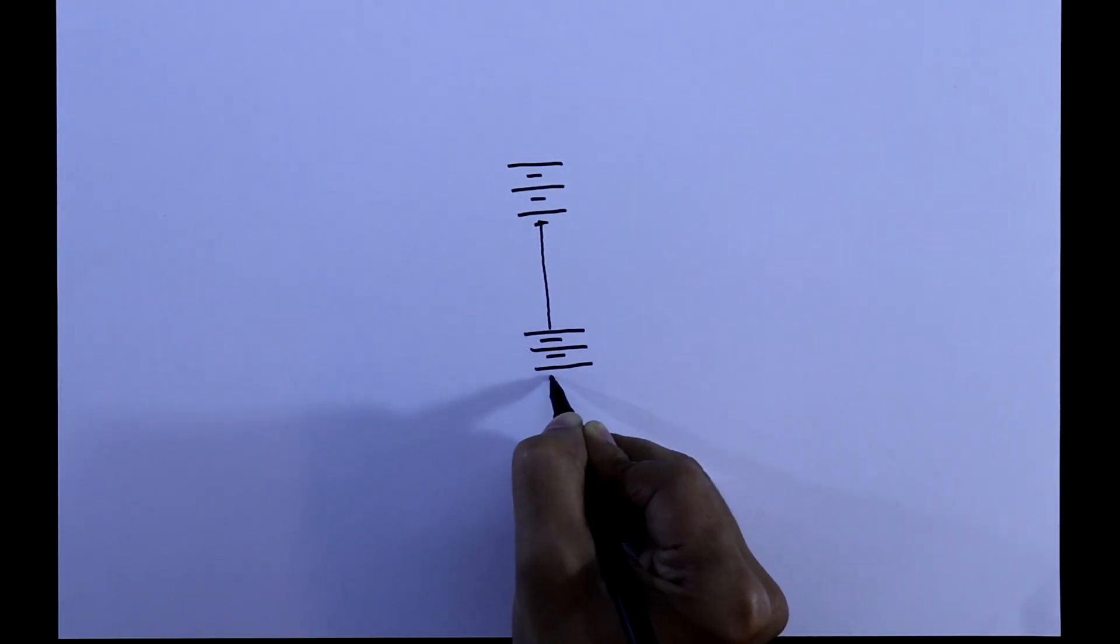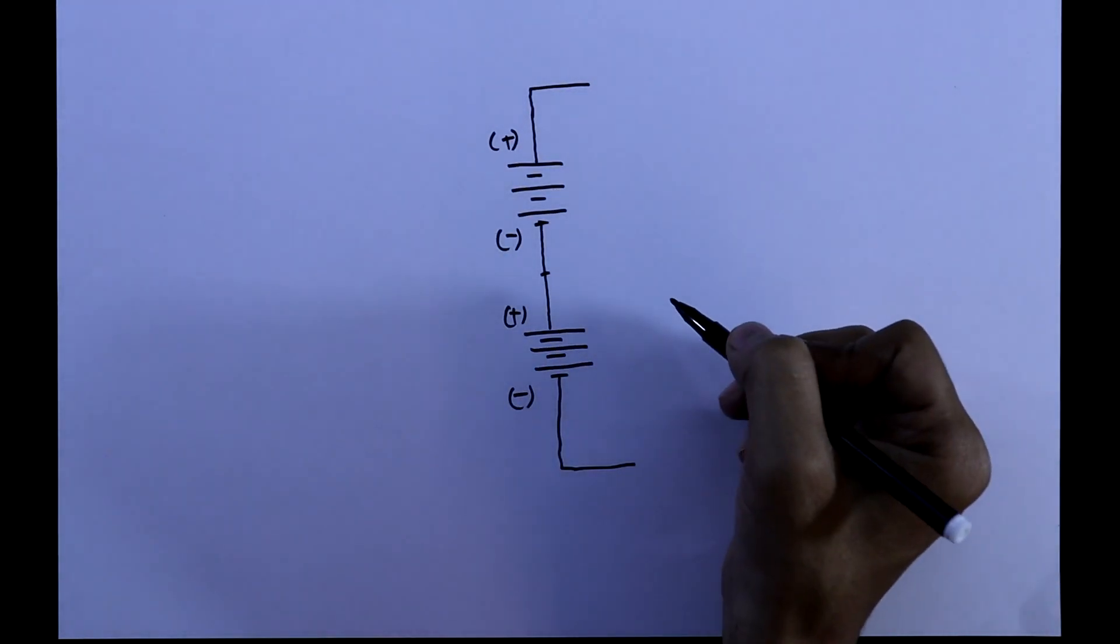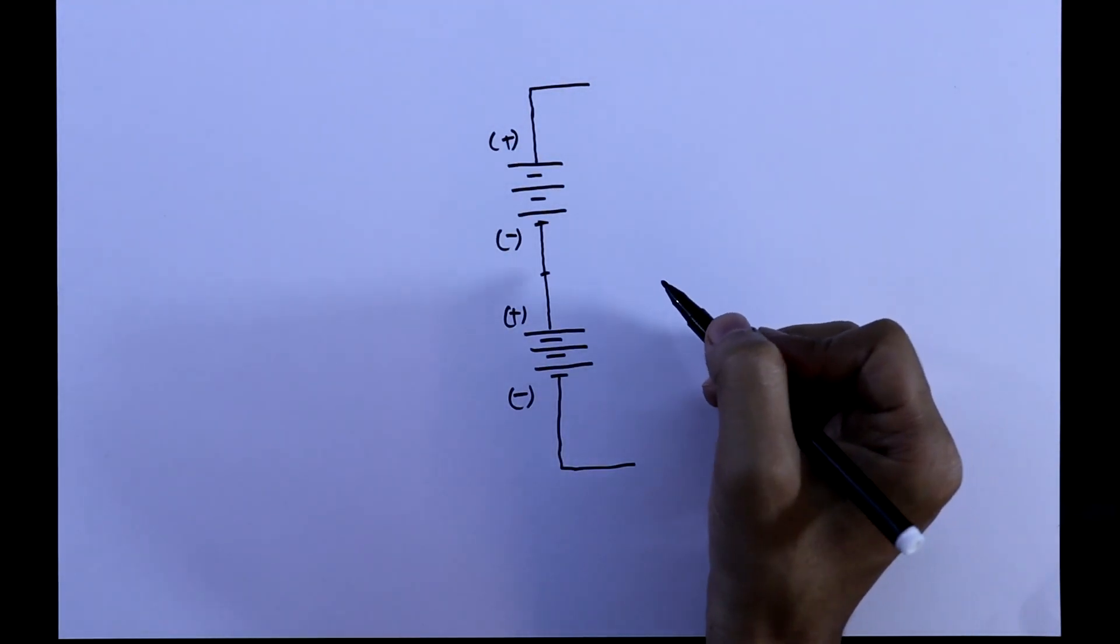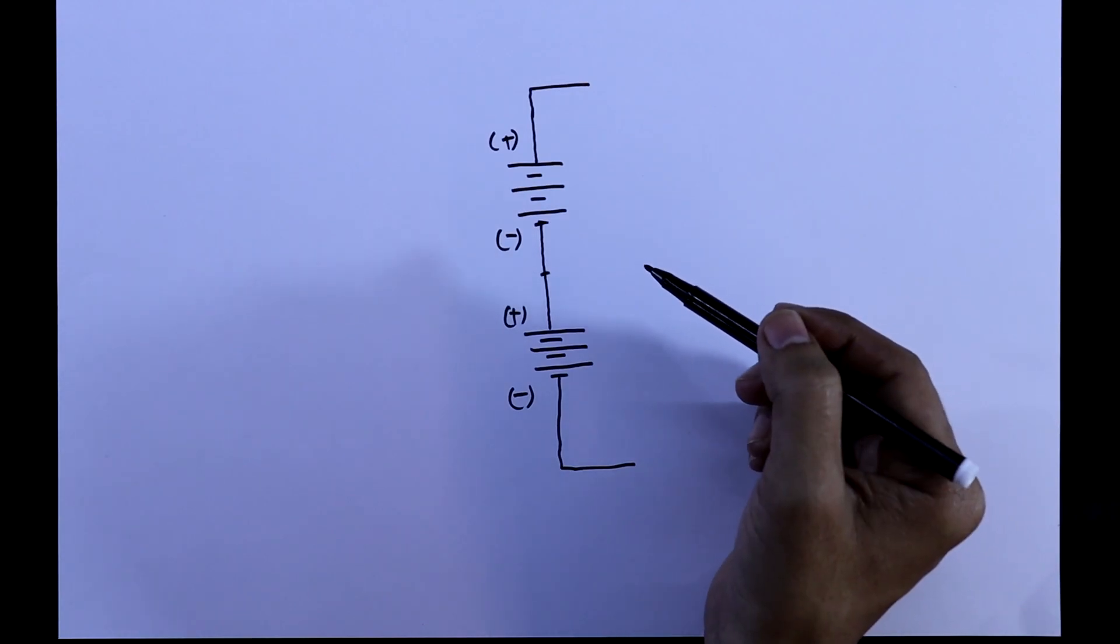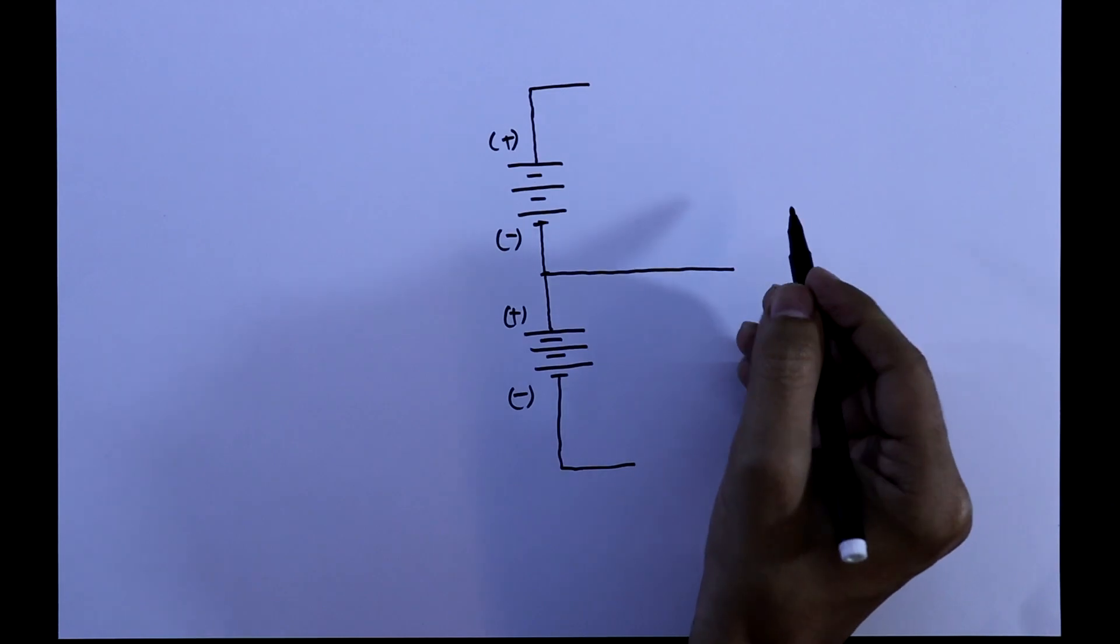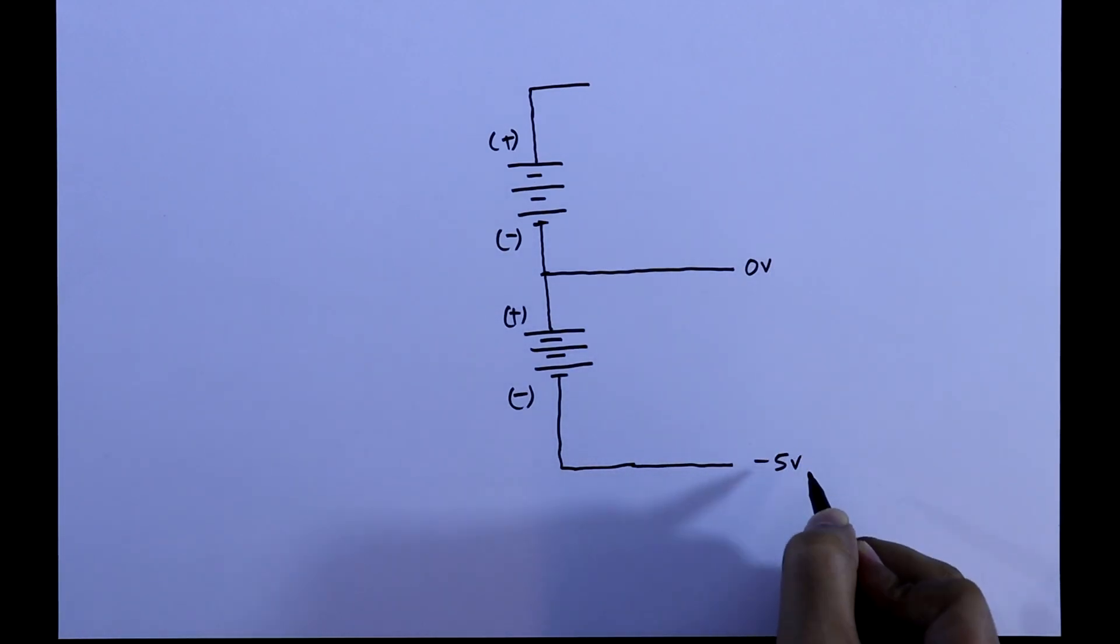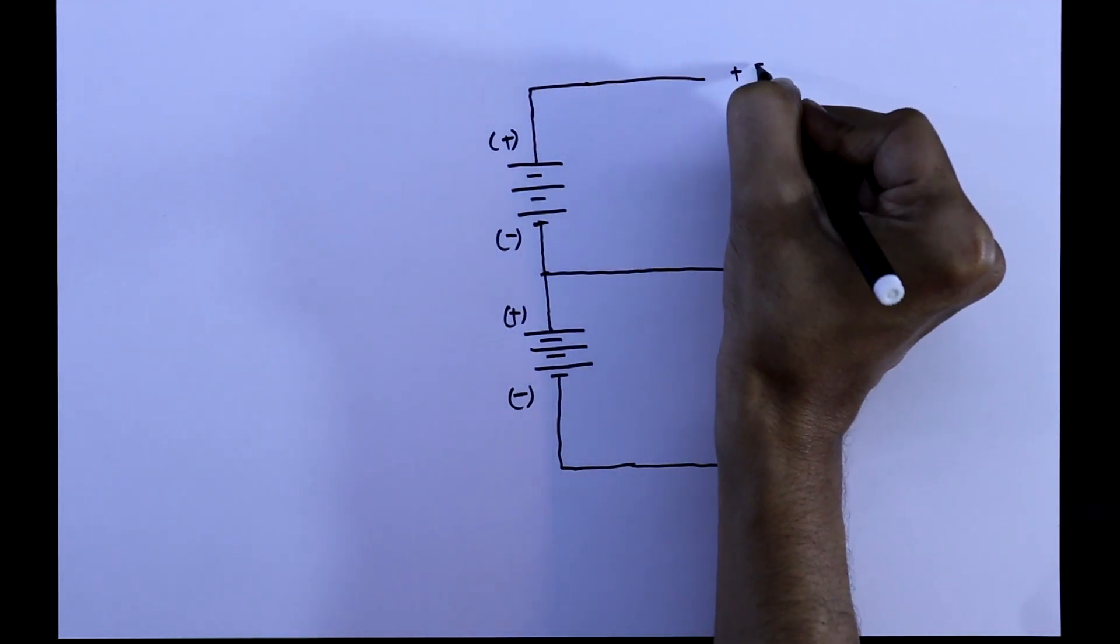You can simply achieve the negative volt by using two batteries. These two batteries are connected in series. Let's say these are 5 volt batteries. If we take this joint as ground or 0 volt, then it will be negative 5 volt and it will be positive 5 volt.